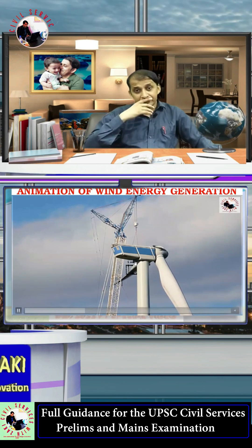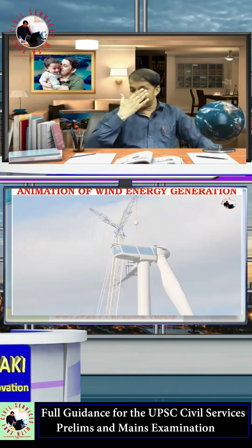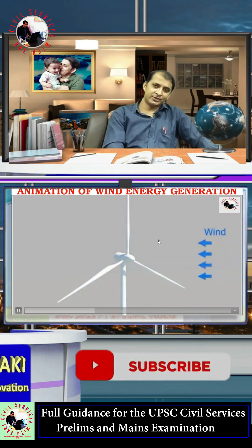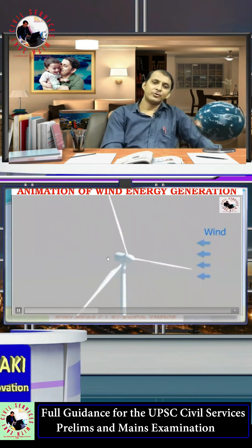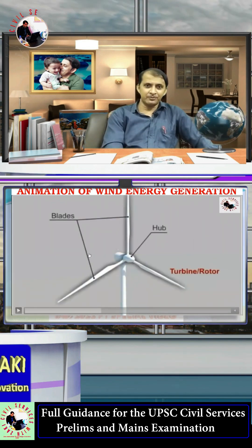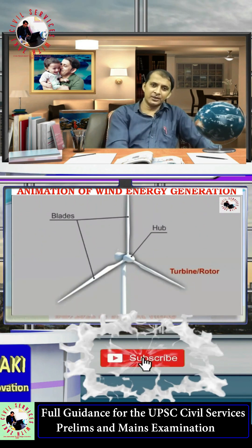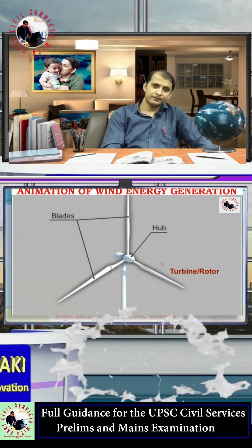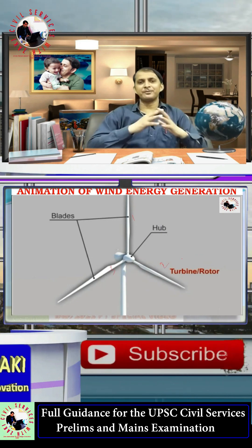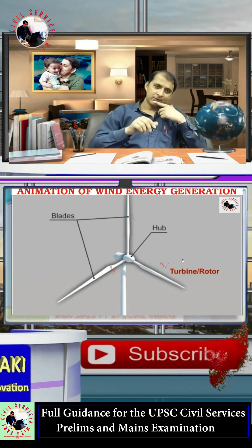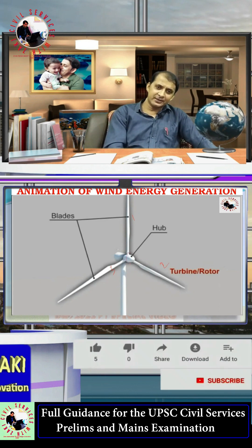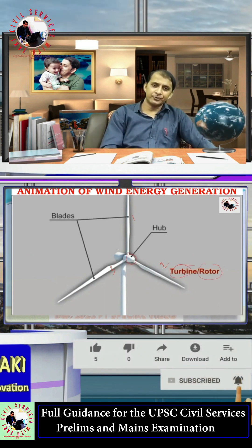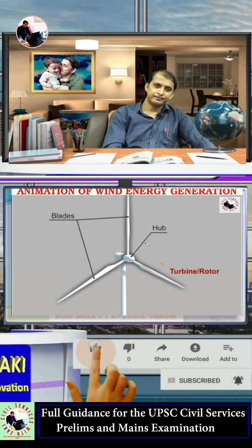In this video we will see how a wind turbine works. A wind turbine basically consists of two main things: number one is the blade — most wind turbines have three blades. The blade and hub together are called the turbine or rotor.